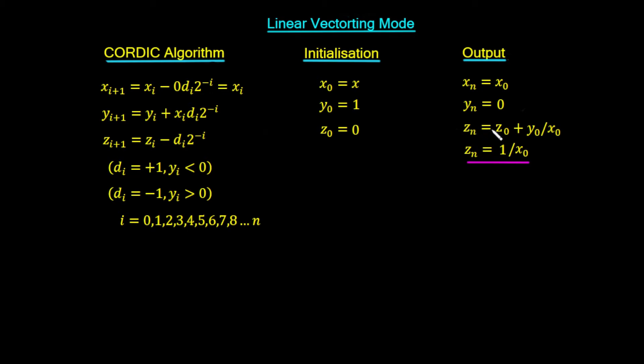Now the output we would get would be z0 plus y0 upon x0. We set z0 is equal to 0, and the y0 is equal to 1. So this gives us a final output angle, which is 1 upon x0, which is the reciprocal.